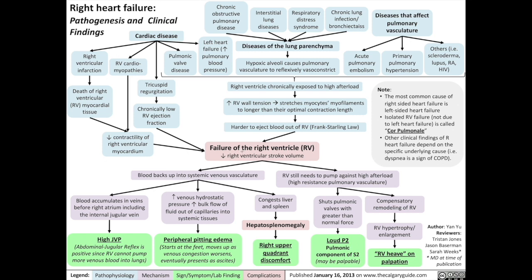So what are the clinical findings of right heart failure that apply to all causes? These clinical findings are caused by two main pathophysiological mechanisms: blood backing up into the systemic venous vasculature, and the right ventricle pumping against a high afterload. First, let's talk about the consequences of blood backing up into the systemic venous vasculature. Blood accumulating in the veins before the right atrium, such as the internal jugular vein, will result in a high JVP or jugular venous pulse. Since the right ventricle cannot pump more venous blood into the lungs, the abdominal jugular reflex will be positive.